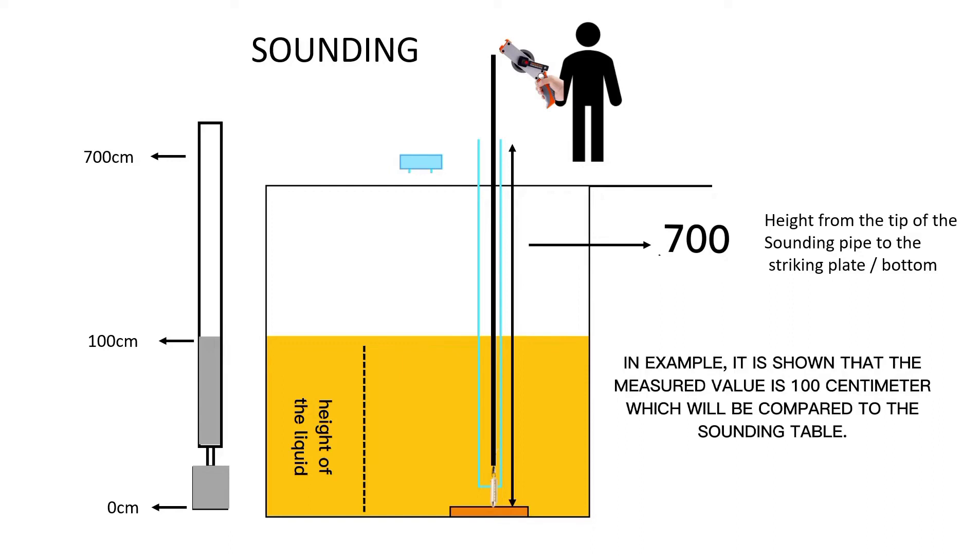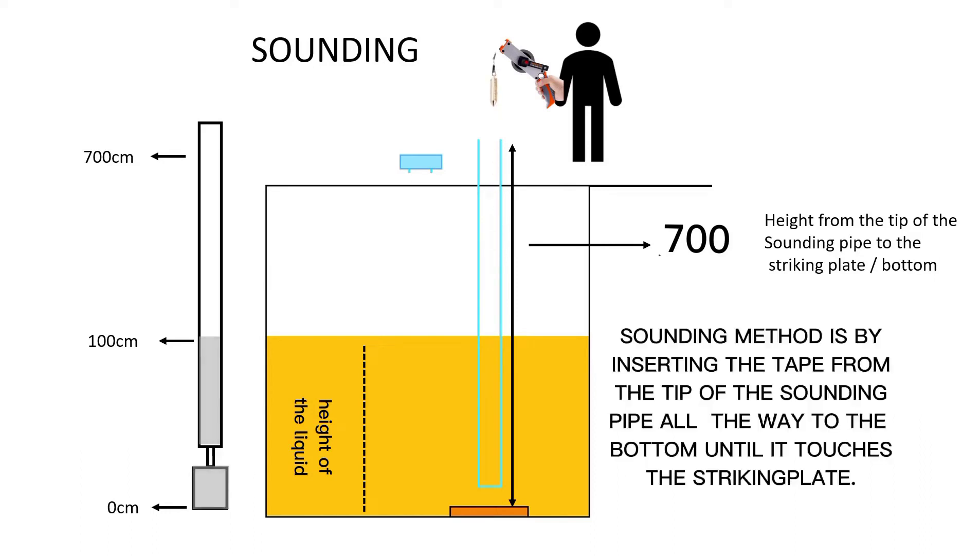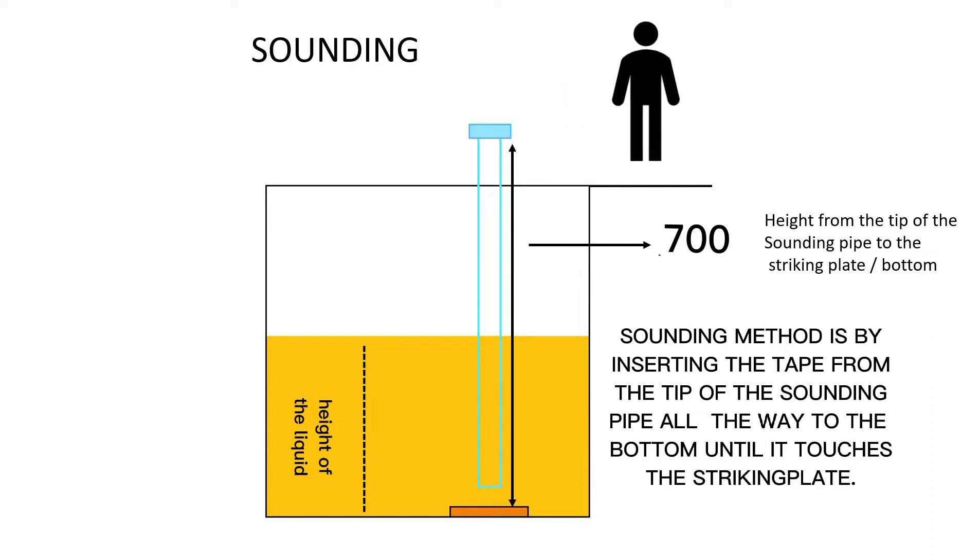In example, it is shown that the measured value is 100 cm, which will be compared to the sounding table. Sounding method is by inserting the tape from the tip of the sounding pipe all the way to the bottom until it touches the striking plate.